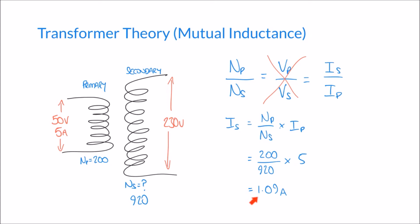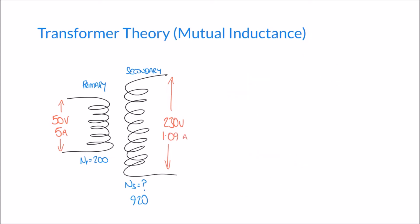Now that we know both the current and the voltage in the secondary coil, we can multiply them together to calculate the power. The formula for power is P = I × V. For the secondary coil: Ps equals Is multiplied by Vs, which is 1.09 multiplied by 230 volts, giving a power of 250.7 watts.